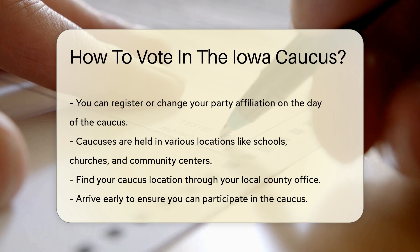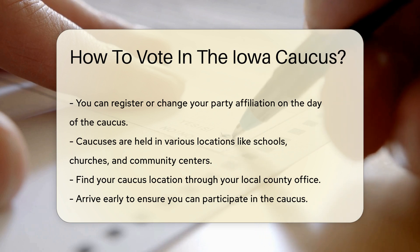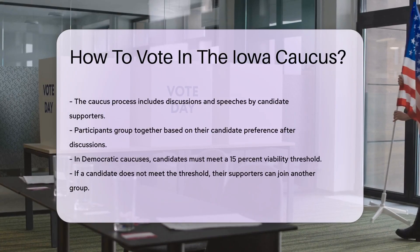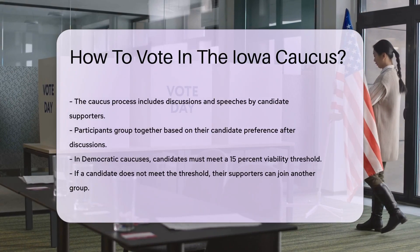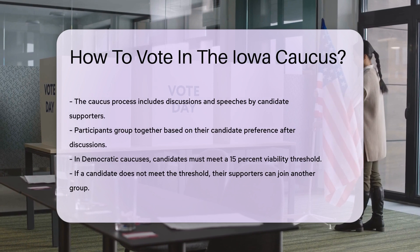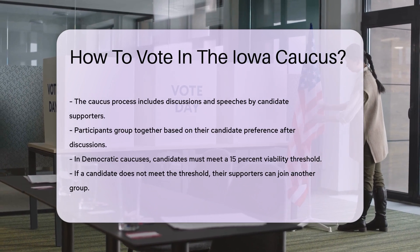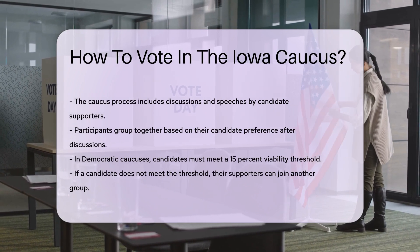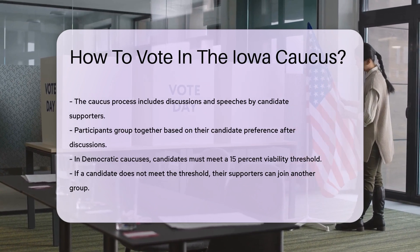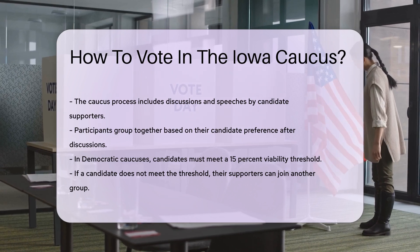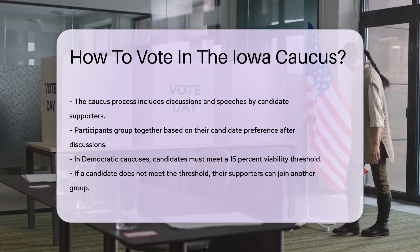The caucus process involves discussions and speeches. Supporters of each candidate try to persuade others. After discussions, participants physically group together based on their candidate preference. In Democratic caucuses, candidates must meet a viability threshold, usually 15%. If a candidate does not meet this threshold, their supporters can join another group.